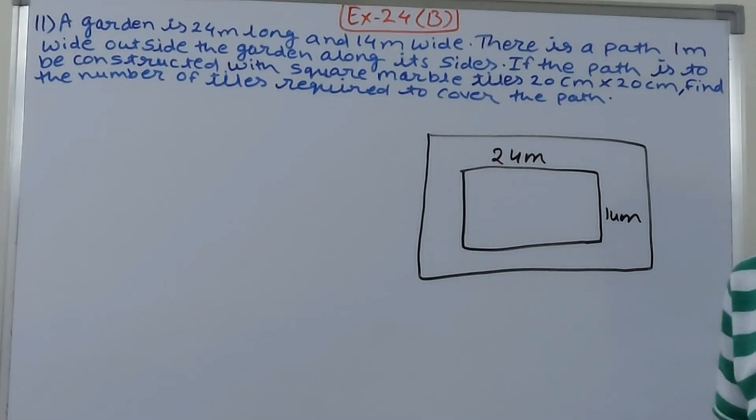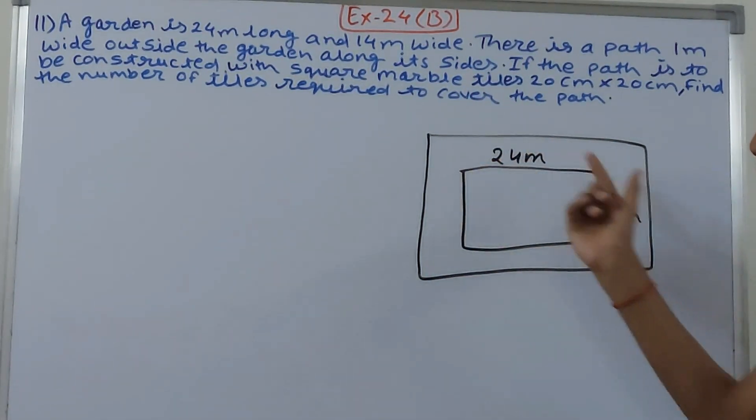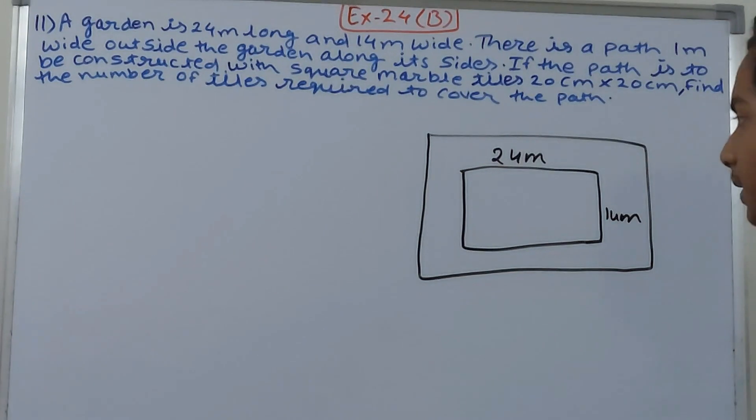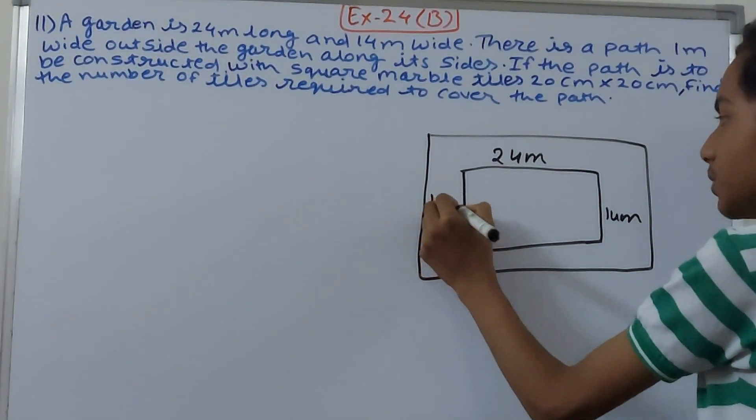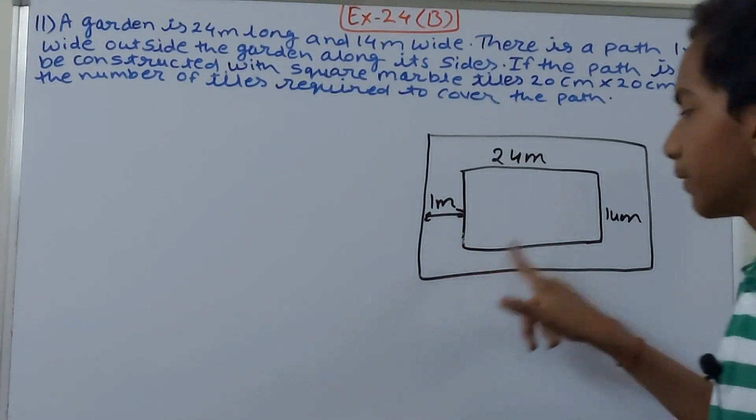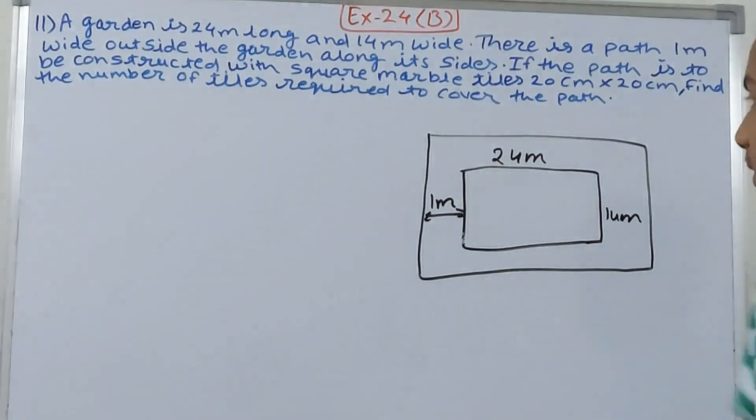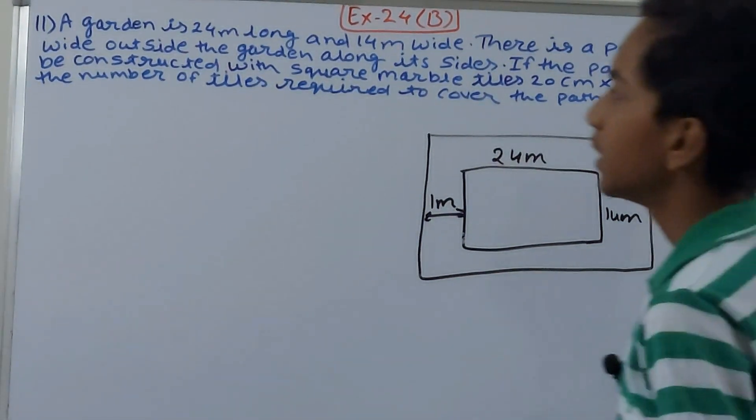You can see there is a path 1 meter wide outside the garden. This is the boundary of the garden and outside of it, this length is 1 meter. The width of the path is 1 meter.